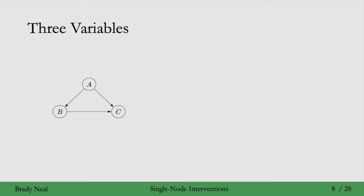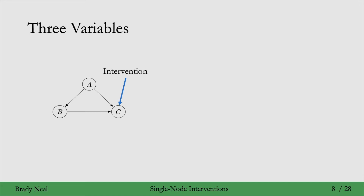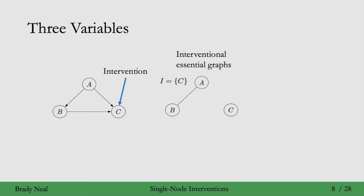We have nodes a, b, and c where there's an edge between any pair of them. If we do an intervention on c, we remove the arrows from a to c and b to c, because those are the parents of c and interventions remove the parents. The remaining graph is just an edge from a to b, and the essential graph of that is just an undirected edge between a and b with no edges to c — that's the interventional essential graph we get.